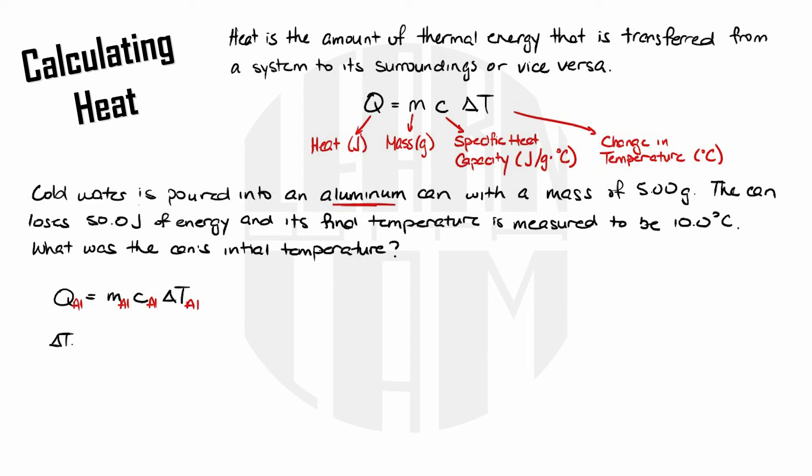Alright so let's rearrange this equation here to solve for Delta T. For heat the can is losing 50.0 joules so I'm going to write negative 50.0 joules. Mass is 5.00 grams and we'll look up the specific heat capacity of aluminum. It's 0.897 joules per gram Celsius. Cancel out the units and throw it into the calculator and I get negative 11.148 degrees Celsius.